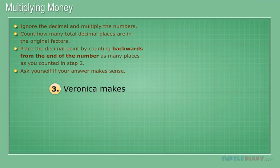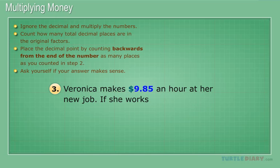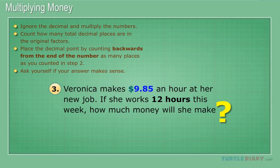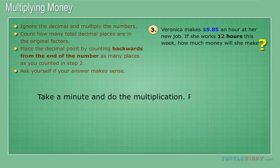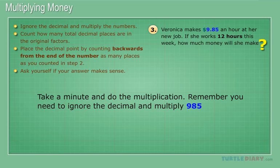Veronica makes $9.85 an hour at her new job. If she works 12 hours this week, how much money will she make? Take a minute and do the multiplication. Remember, you need to ignore the decimal and multiply 985 by 12.